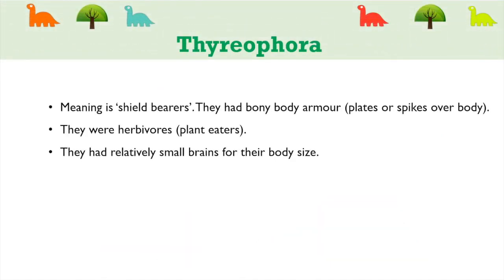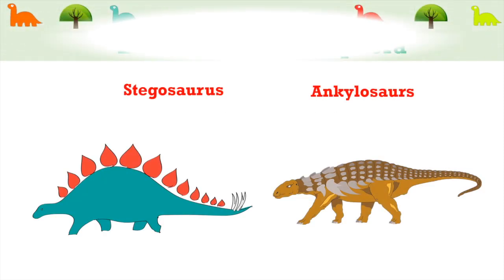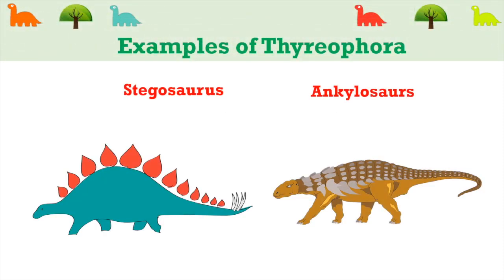Thyreophora means shield bearers. They had bony body armor — either plates or spikes over their body. All of these dinosaurs were herbivorous, meaning plant eaters. They had relatively small brains for their body size. Examples of Thyreophora are Stegosaurus and Ankylosaurus.